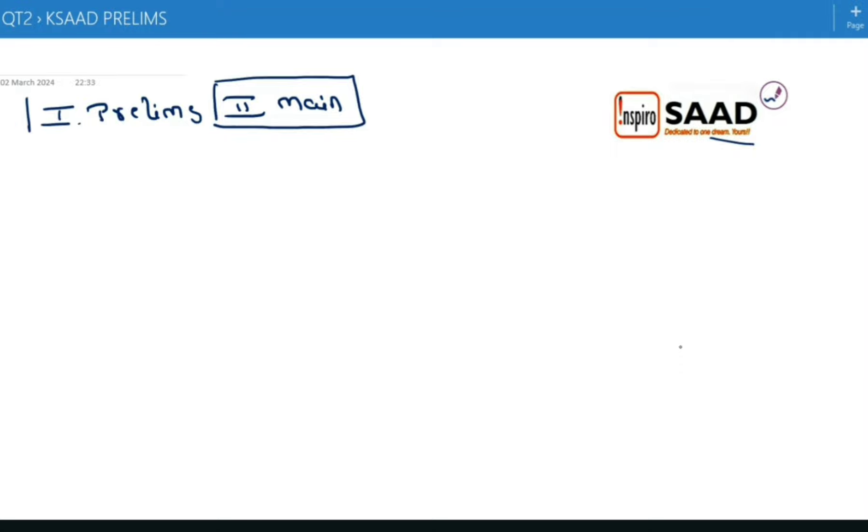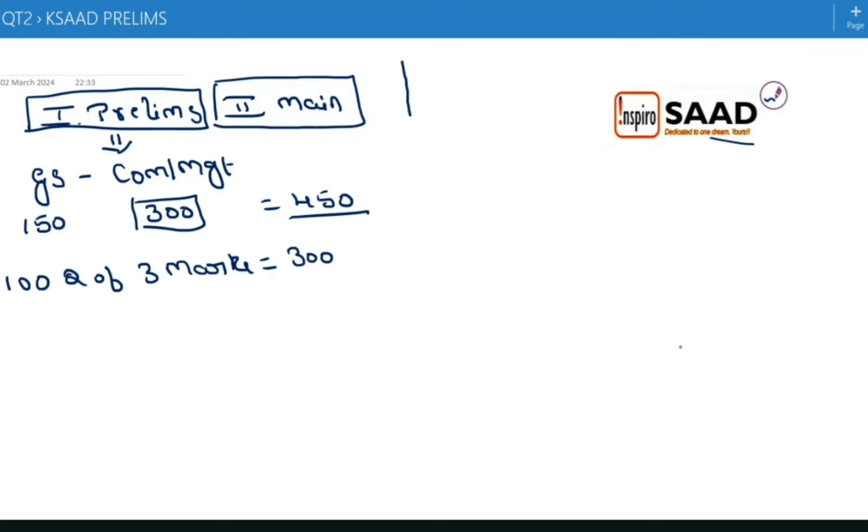In order to qualify for mains, we require prelims qualification, which is very important. Prelims consists of GS and Commerce and Management. GS is for 150 marks, Commerce and Management is for 300 marks, totaling 450 marks with 100 questions of three marks each.